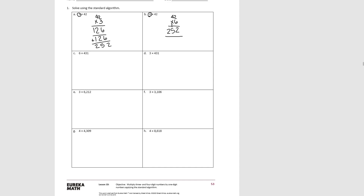Try C: 431 times six. One times six is six. Three tens times six is eighteen tens. Four hundreds times six would be twenty-four hundreds, plus one more would be twenty-five hundreds.